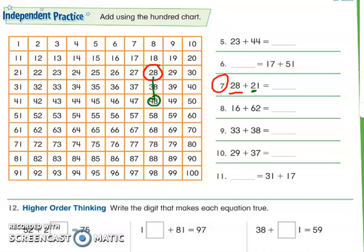Then in the ones place, I have the number 1. So I am going to move on one more digit. Therefore my answer would be 49.